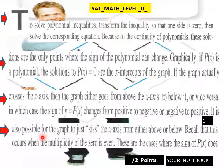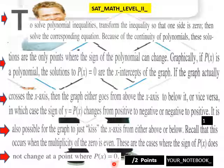It is also possible for the graph to just kiss the x-axis from either above or below. Recall that this occurs when the multiplicity of the zero is even. These are the cases where the sign of P(x) does not change at a point where P(x) = 0.